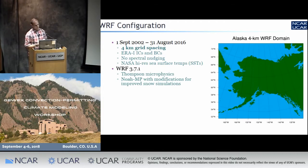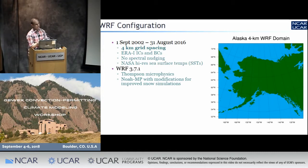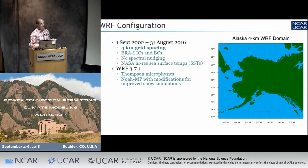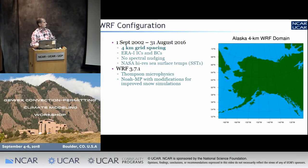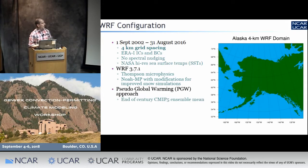Some details on WRF: this is all in a published paper in GMD — Monaghan et al. — as far as the model configuration. We use Thompson microphysics, WRF 3.7.1, the Noah-MP land surface model with some modifications to improve snow simulations. This is the PGW approach using the standard CMIP5 ensemble mean perturbations.